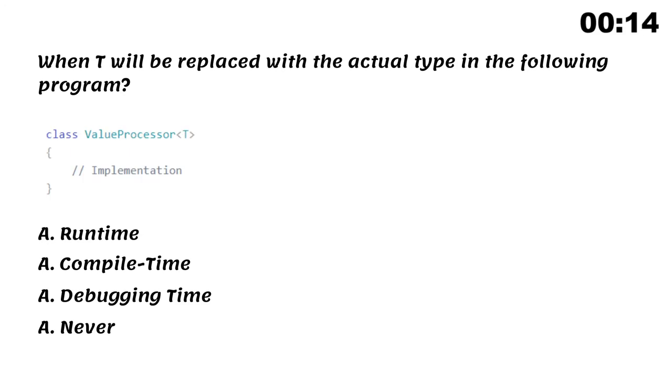When the type parameter T will be replaced with the actual type in the following program. Runtime, Compile Time, Debugging Time, or Never. Generics type parameters are replaced with the actual type at compile time.